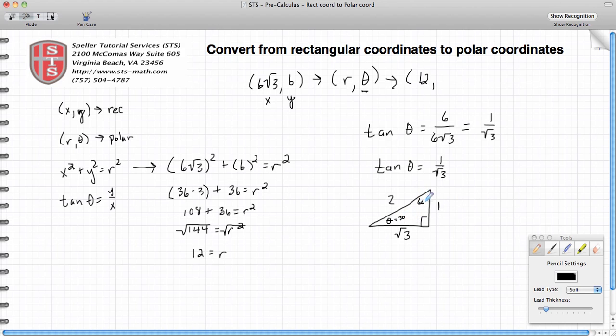Opposite the 60 degrees is √3, and opposite the hypotenuse is 2. So here I see that θ is equal to 30 degrees. So I could say (12, 30°) or I can use the radian measures and say (12, π/6).